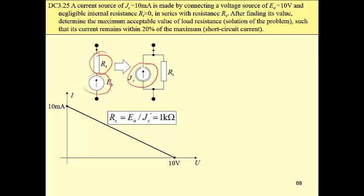Easily from Ohm's law, we can calculate this resistance. This resistance is 1kΩ, and we have the I-U relationship drawn here.